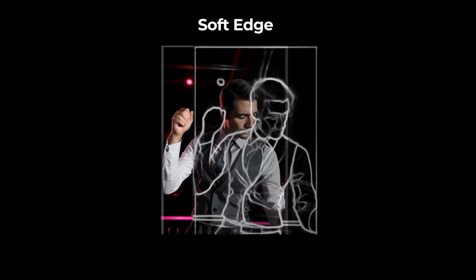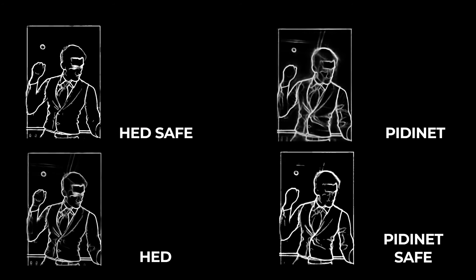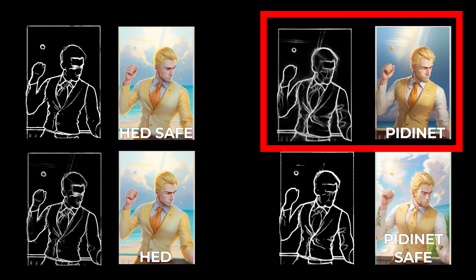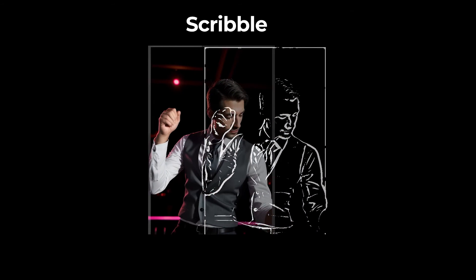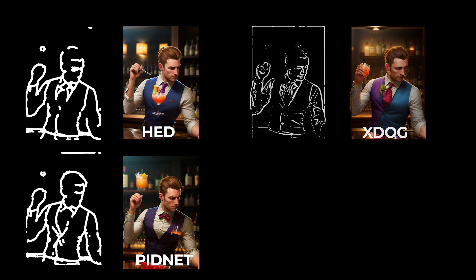Soft Edge is again like Canny and Line Art, but creates a map with softer edges to give Stable Diffusion more freedom. There are a few options to choose from here, but the actual documentation recommends to use Soft Edge PD. Scribble turns your control picture into, well, a scribble. It's like Canny, Line Art, and Soft Edge, but of the four, this one gives Stable Diffusion the most amount of freedom when generating because it doesn't pick out as much detail. Scribble HED gives you more details, Scribble PidNet gives you less, and Scribble XDOG gives you a slider to control the amount of detail you want.